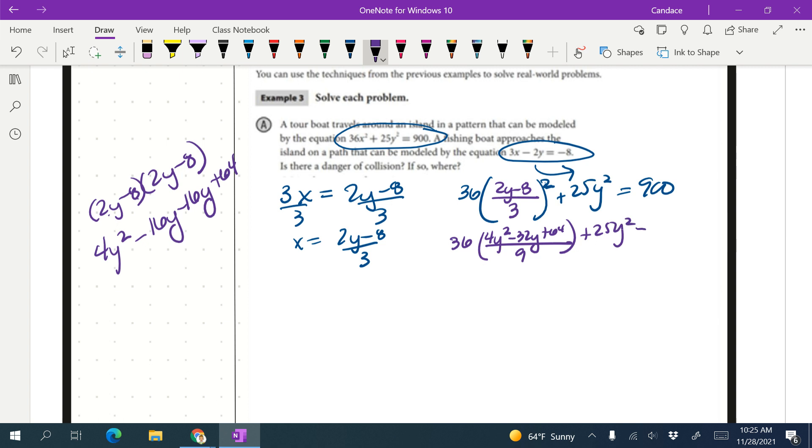And we've got plus 25y squared equals 900. I am going to choose to simplify a little bit. I know that 9 goes into 36 four times, and then I'm going to distribute that 4 in. So when I distribute the 4 in, I end up with 16y squared minus 128y plus 256 plus 25y squared equals 900.